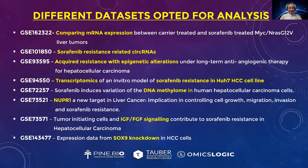I took eight datasets in total, with different factors affecting sorafenib resistance in HCC. These factors included mRNA expression comparison, sorafenib resistance related to circular RNAs, acquired resistance with epigenetic alterations, transcriptomics, DNA methylome data, Nupr1 as a new target found for liver cancer, IGF-FGF signaling role, and SOX9 and SOX9 knockdown. Here I have shown the R outputs for one of my datasets to give a hint of what I am working on.